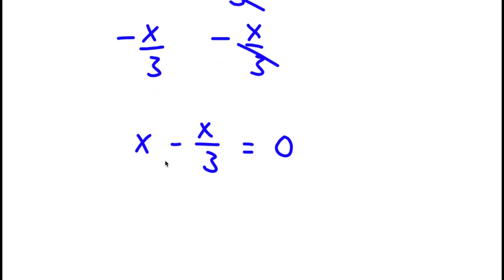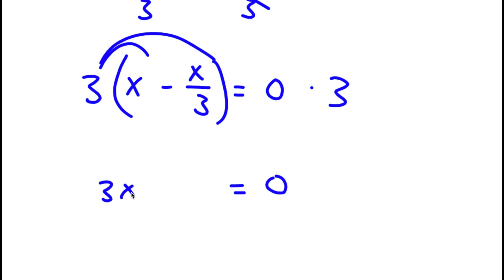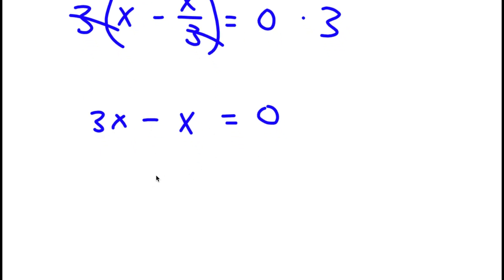From here, I'm going to multiply both sides by 3. So 0 times 3 is simply 0. And 3 times x minus x over 3 — I'm going to distribute this to all my terms. 3 times x is 3x, and negative x over 3 times 3, these two 3s cancel out, so I'll simply be left with negative x. So I have 3x minus x equals 0. 3x minus x is 2x, so I have 2x equals 0.